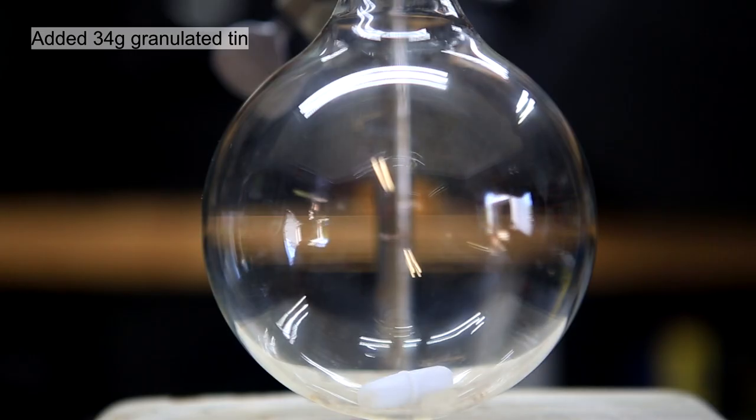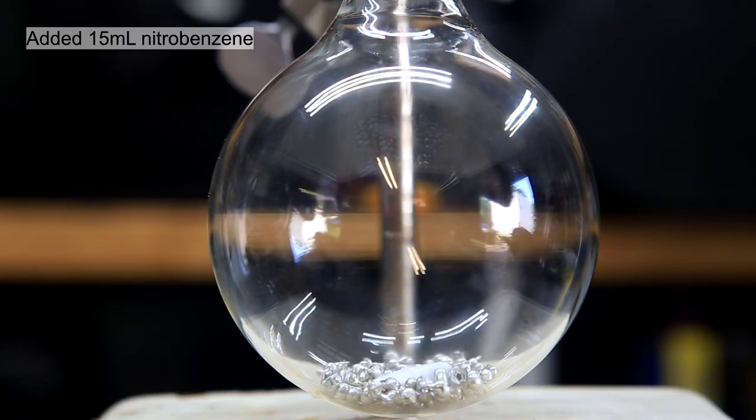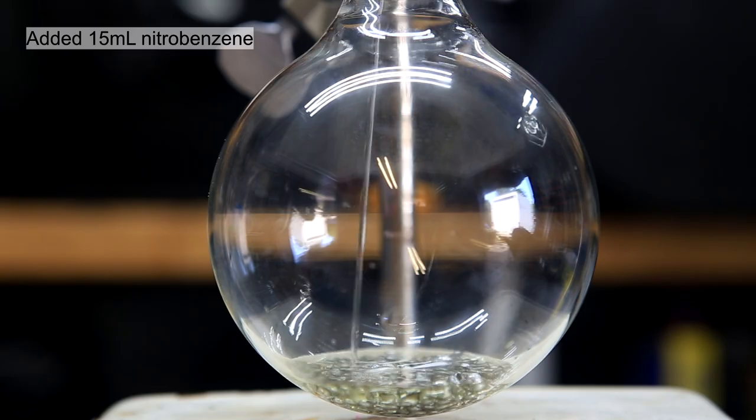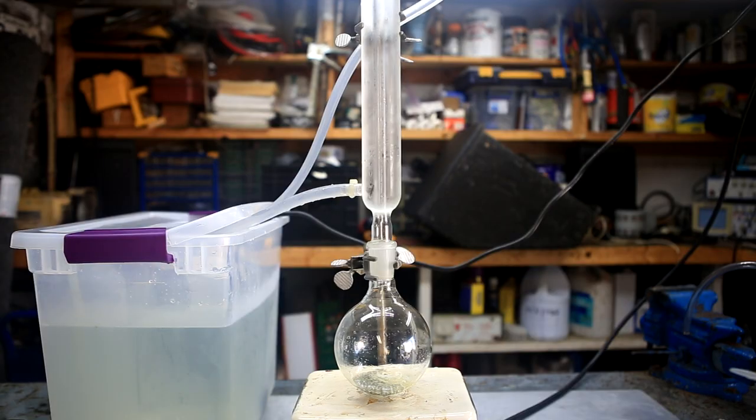To a round bottom flask was added 34 grams of granulated tin. To this tin was poured in 15 milliliters of nitrobenzene that I made in a previous video. This was then connected to a condenser, and the splashing you see is actually a stir bar attempting to spin.